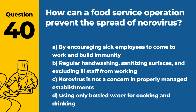Question 40. How can a food service operation prevent the spread of norovirus? The answer is B: Regular hand washing, sanitizing surfaces, and excluding ill staff from working. These measures are effective in preventing the spread of norovirus.